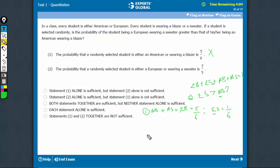Come to statement 2. Statement 2 says that European wearing a blazer plus European wearing a sweater (all Europeans) plus American wearing a sweater is 3 by 5. Therefore, AB (American wearing blazer) is the only part left, which is 2 by 5. This talks about only AB. It doesn't talk about ES. Therefore, this alone is also not sufficient.